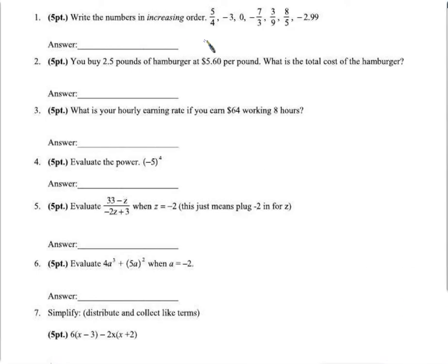Let's get started with number 1. We've got to figure out where all these numbers lie — I'm trying to see if you understand negative numbers and fractions and how to compare fractions. Increasing order means we start at the smallest number, the most negative, which is farthest to the left of 0 on the number line.